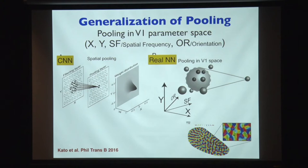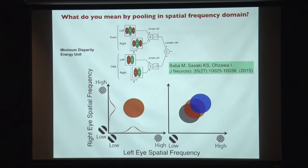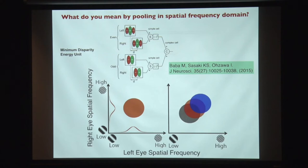To give you an example of what pooling in the spatial frequency domain means: a single unit tuned to a single spatial frequency gives a circular locus of response in left-right spatial frequency space. If you pool many units tuned to different frequencies, you end up with an elongated feature along the diagonal. That's the simplest prediction.